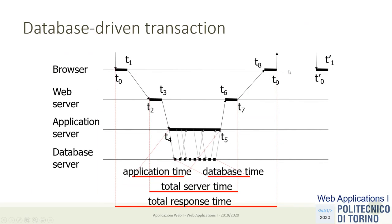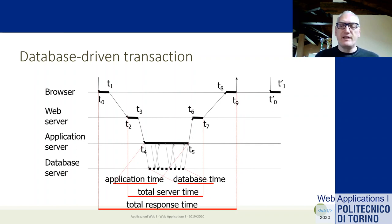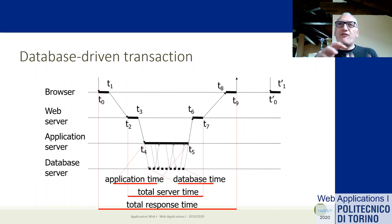Going back to the timing diagram: the application server, once it receives the request, understands it needs some data and starts querying the database server. For generating one single web page, I may need to query the database server more than once. In a hypothetical messaging application, I need a query for the list of messages, another for the number of unread messages, and another to extract contact names — so for creating the content of one single page, every portion probably needs to access different parts of the database requiring different queries.